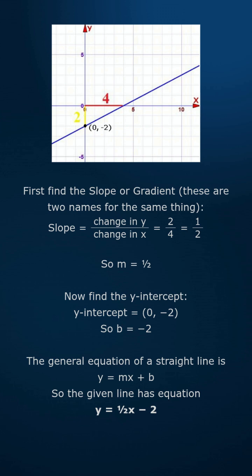Now find the y-intercept. Y-intercept equals (0, -2). So b equals minus 2.